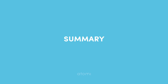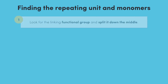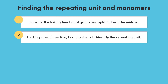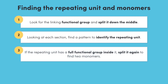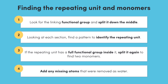Let's recap the steps we went through to find the monomers of a condensation polymer. Start by looking for the linking functional group and split each one down the middle. Look at each section, trying to find a pattern and identify the repeating unit. If the repeating unit has a linking functional group inside it, then it's a copolymer, so you're going to have to split it again to get the two different monomers. Finally, add any missing atoms that were removed as water to get the complete monomer. If you follow these steps, you'll be sure to find the monomers of any condensation polymer you come across. See you in the next one!